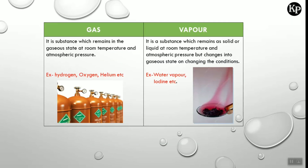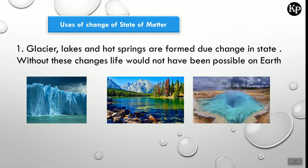There is a difference between gas and vapors. A gas is a substance which remains in the gaseous state at room temperature and atmospheric pressure — for example, hydrogen gas, oxygen gas, helium, etc. A vapor is a substance which remains as solid or liquid at room temperature and atmospheric pressure but changes into the gaseous state on changing its conditions — for example, water vapor and iodine.